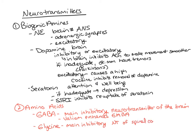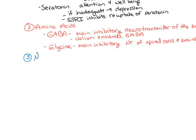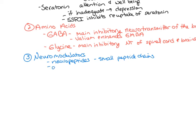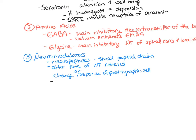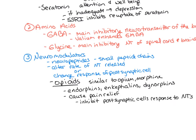A third class of neurotransmitters are neuromodulators — neuropeptide neurotransmitters. Neuropeptides are small peptide chains synthesized and released by the synaptic terminal. Neuromodulators can alter the rate of neurotransmitter release by the presynaptic cell and change the response of the postsynaptic cell. An example of neuromodulators are opioids, which have similar effects to opium and morphine. There are three classes in the central nervous system: endorphins, enkephalins, and dynorphins — all causing pain relief by inhibiting the postsynaptic cell's response to the neurotransmitter.